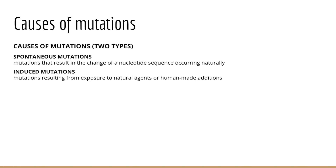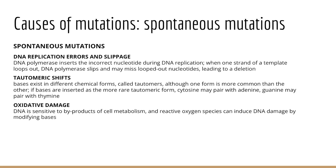Let's look at the causes of mutations. There are two different types: spontaneous and induced. Spontaneous mutations are changes in the nucleotide sequence of genes that appear to occur naturally — no specific chemical or physical agent is associated with their occurrence. Many arise as a result of normal biological and chemical processes altering the structure of our nucleotide sequence. We're going to cover three processes: DNA replication errors and slippage, tautomeric shifts, and oxidative damage.